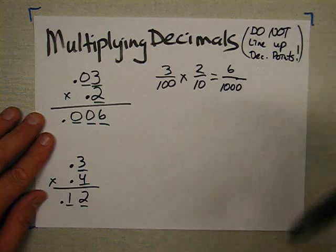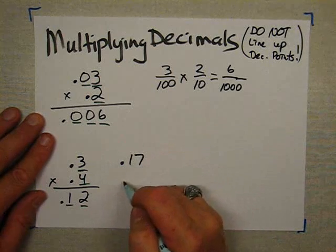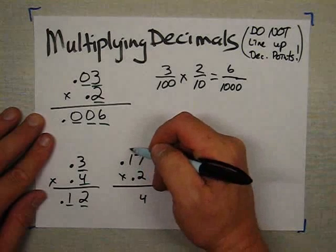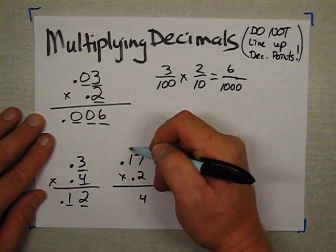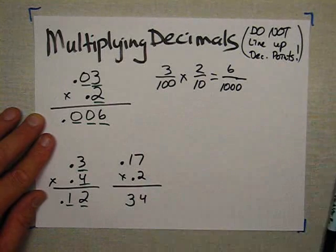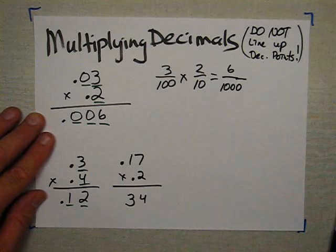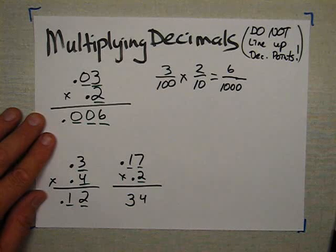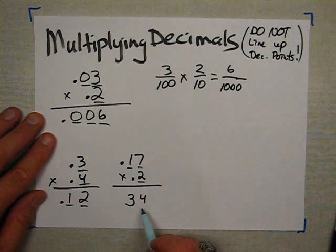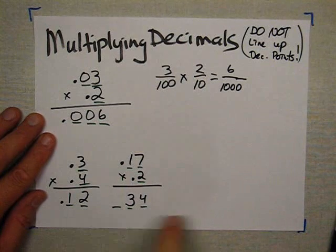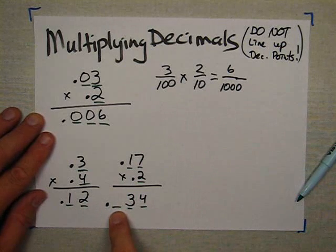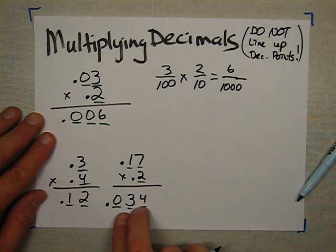Next example: .17 times .2. Two times seven is fourteen, carry one. Two times one is two, plus the one more makes three. Now in the problem, count how many digits are on the right side of the decimal points: one, two, three. So in the answer I also have to have three digits on the right side of the decimal point — one, two, three. There have to be three digits on the right side, so that missing digit has to be a zero. The answer is .034 — thirty-four thousandths.